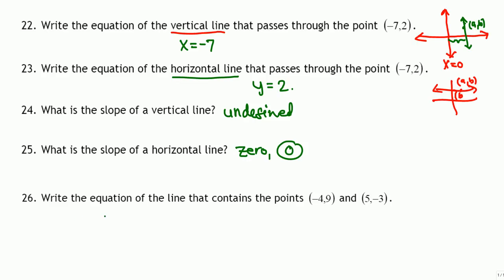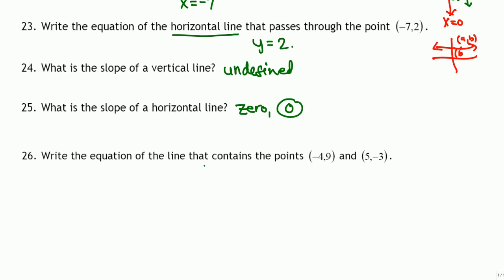Now problem 26: write the equation of the line. The equation of a line is always y equals mx plus b. We need to find the slope first, then use a given point to determine b. This line contains two given points, and from two points we can find the slope. Let's find the slope first — slope is rise over run, which means change in y coordinates divided by change in x coordinates.